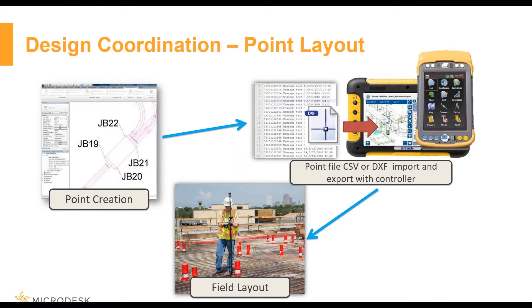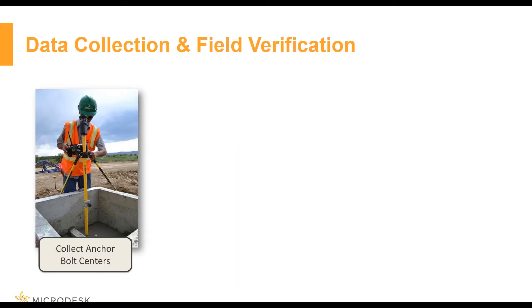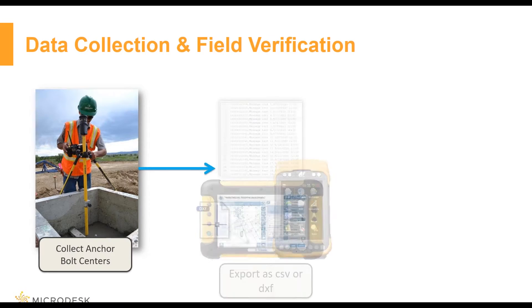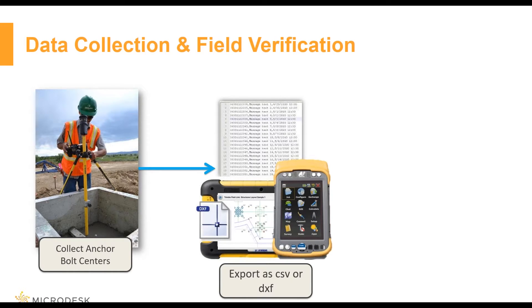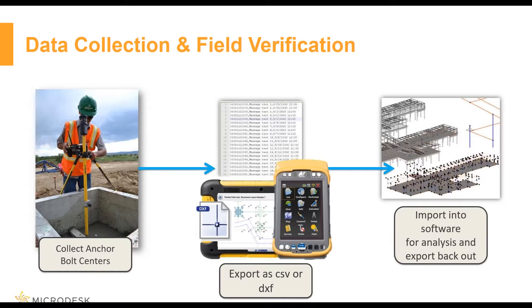For the next workflow, it's kind of the same idea in reverse — collecting locations from the field. Maybe we're working on an existing building and we want to get all those locations from the field, bring them back into the design or construction model, and ensure the dimensions of the existing construction actually match what we used. We take those points and export them from the field devices as a CSV, DXF, or another point file. The layout tool in Revit, AutoCAD, and Navisworks can import those points back in — it doesn't have to go through all the Autodesk services. We can bring that point file in and either manually compare and contrast, or take advantage of the tools to automatically coordinate for us.